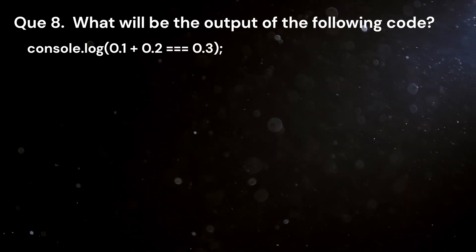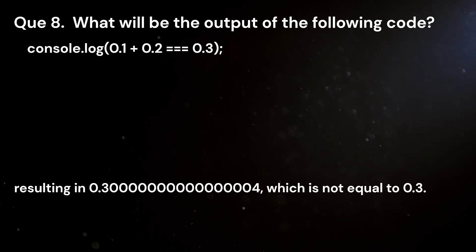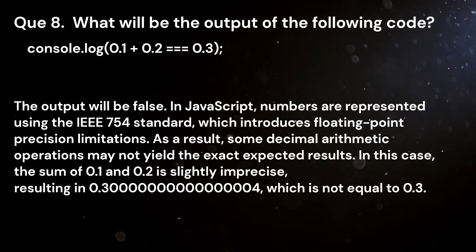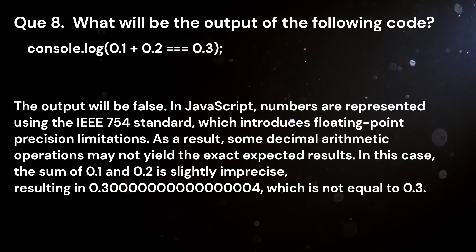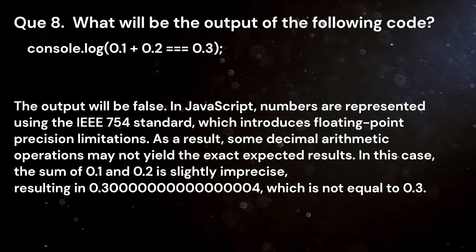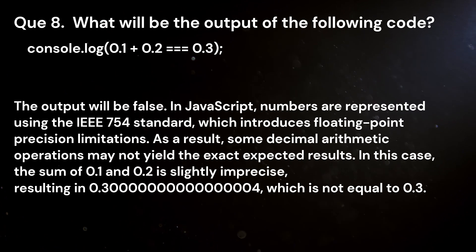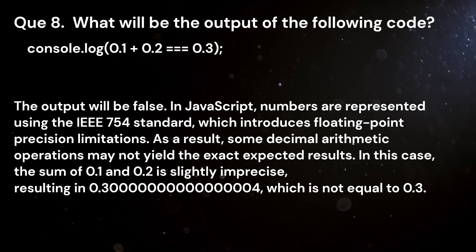Question 8. What will be the output of the following code? console.log(0.1 + 0.2 === 0.3). Answer. The output will be false. In JavaScript, numbers are represented using the IEEE 754 standard, which introduces floating point precision limitations. As a result, some decimal arithmetic operations may not yield the exact expected results. In this case, the sum of 0.1 and 0.2 is slightly imprecise, resulting in 0.30000000000000004, which is not equal to 0.3.